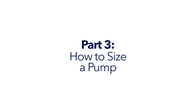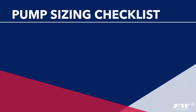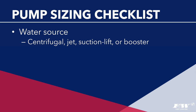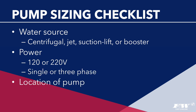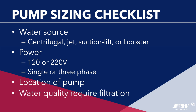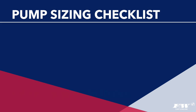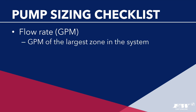Now for the exciting part — actually sizing a pump. First, you'll want a sense of what kind of pump you need: based on your water source, determine which type fits best — centrifugal, jet/suction lift, or booster. Then consider what power is available (120 and/or 220 volt, single or three phase), whether there is a place to mount the pump or if a submersible is required, and whether water quality will require filtration. Next, calculate the two crucial numbers: flow rate and pressure.